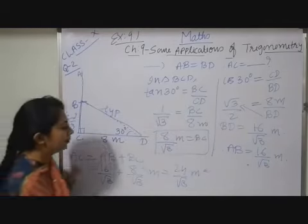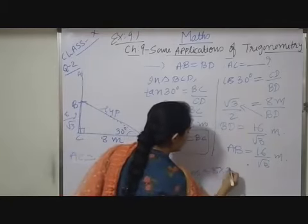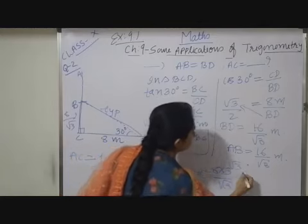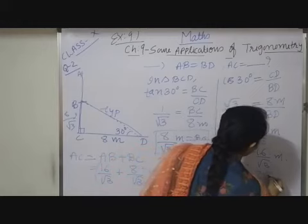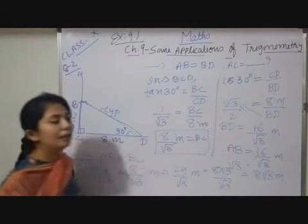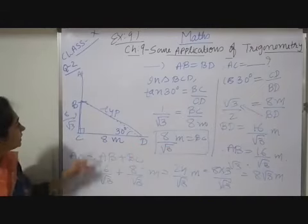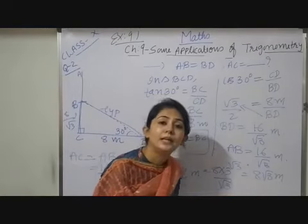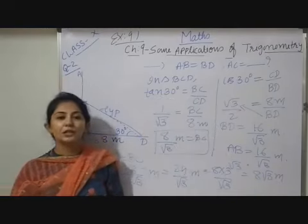Now 24 is what? 8 times 3. So 8 into 3 upon root 3, this value I can cancel by root 3, which is equals to 8 root 3 meters. So here you can conclude that thus the height of the tree will be 8 root 3 meters. Hope this question is understood. Thank you.